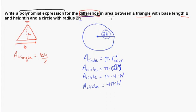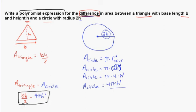And so now we're trying to come up with an expression for the difference, and remember difference means subtraction, between the area of the triangle and the area of the circle. So that's going to be the area of the triangle minus the area of the circle. And so the area of the triangle is, like we had up here, bh over 2, so bh over 2, minus the area of the circle, which is 4πh², so minus 4πh². So your final answer would be this. This would be a polynomial expression for the difference between the area of the triangle and the area of the circle.